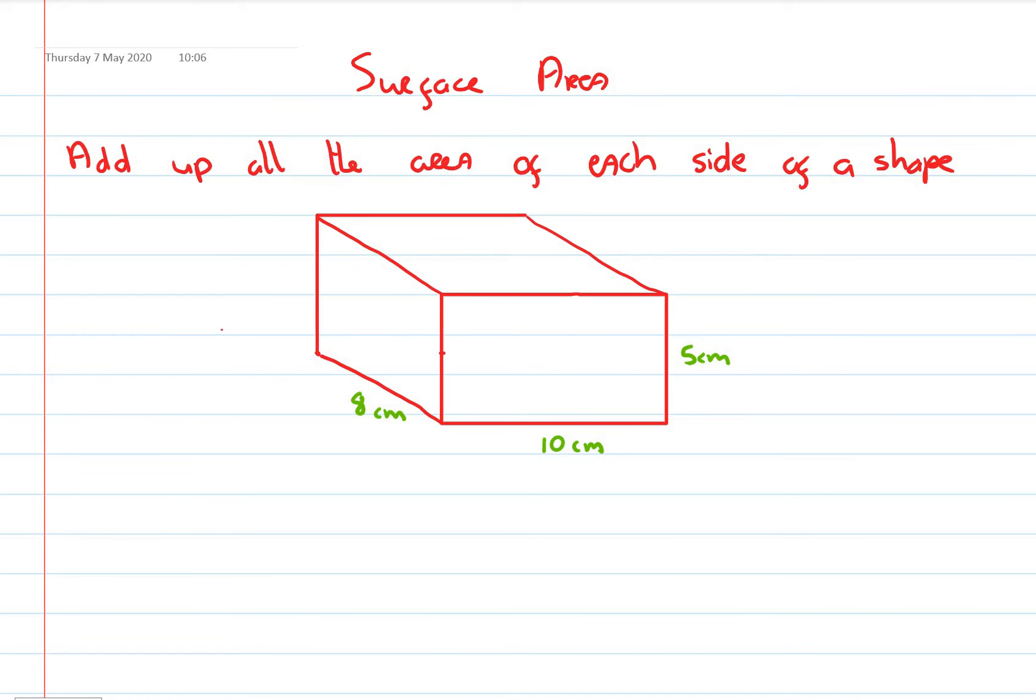Hello, in this video we're going to look at finding the surface area of different types of 3D shapes. So we have here a rectangular prism, the width of it is 10 cm, the depth of it is 8 cm, the height of it is 5 cm. And we want to find the surface area of that shape.